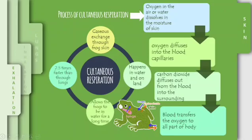Gaseous exchange through the skin is called cutaneous respiration. Cutaneous respiration can happen in water and also on land. This is because the frog can keep its skin moist in two ways which I mentioned just now. Cutaneous respiration also allows the frog to stay in water for a long time because it cannot use lungs to breathe in water. Cutaneous respiration is 2.5 times faster than pulmonary respiration because there is no specific movement needed for this respiration. Next, I would like to explain the process of cutaneous respiration.